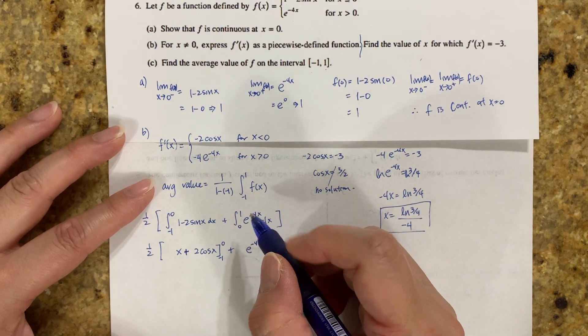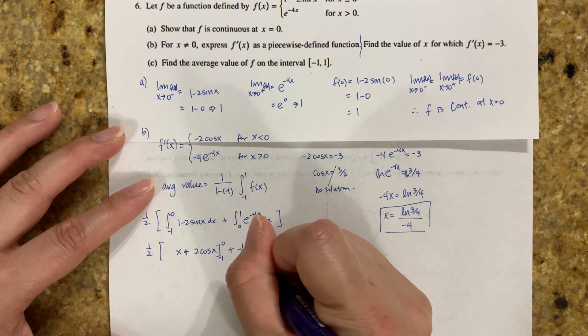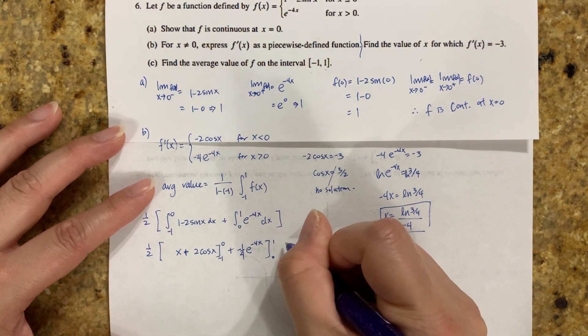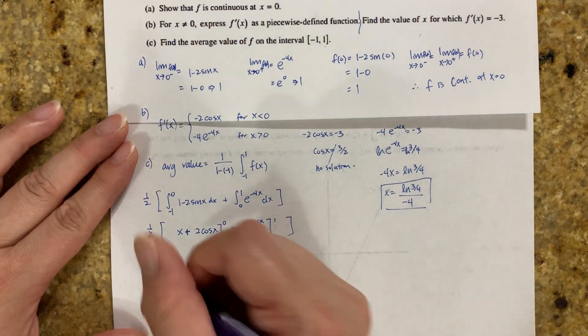But don't forget chain rule - the -4 comes out as a reciprocal, giving -1/4 times e^(-4x). That's my antiderivative, evaluated from -1 to 0 and 0 to 1.